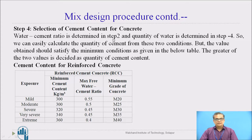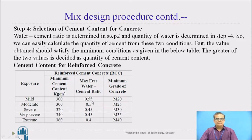Selection of cement content: cement content depends upon the exposure of concrete to the environment. For mild exposure, the minimum cement content is given as 300 kg per cubic meter, and the free water-cement ratio is 0.55 for M20 grade of concrete. These values are given by the IS code and are to be referred.